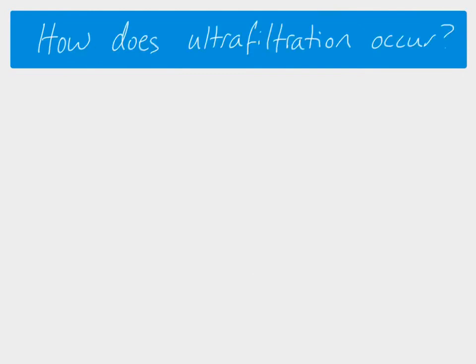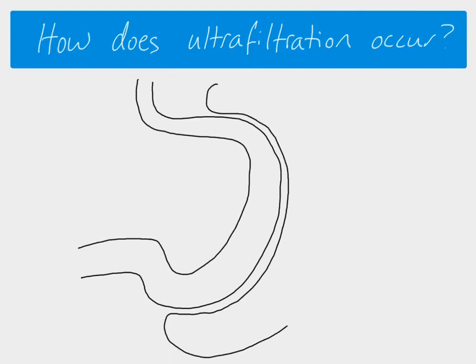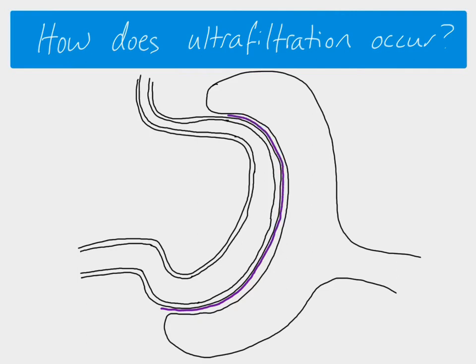So we need to look at how ultrafiltration occurs. If we redraw our diagram, here we have our glomerulus and our Bowman's capsule, but this time with a bit more detail. We draw here the lining of the capillary — the wall of the capillary where we find all the capillary epithelial cells on both sides. Then in between the capillary and the Bowman's capsule, we have a layer called the basement membrane, which is made of a combination of collagen and glycoproteins.